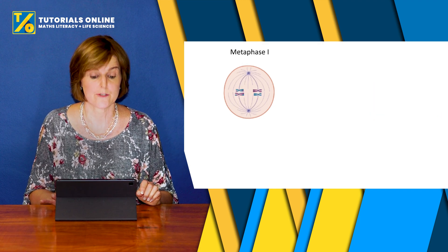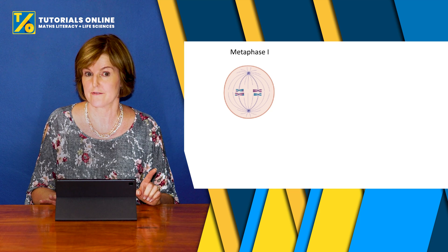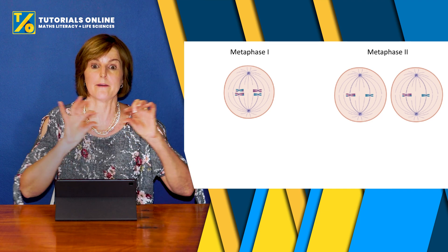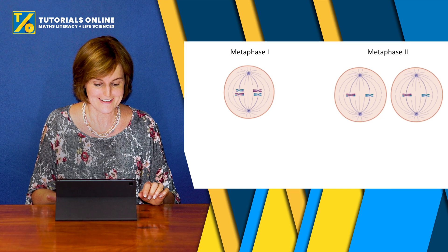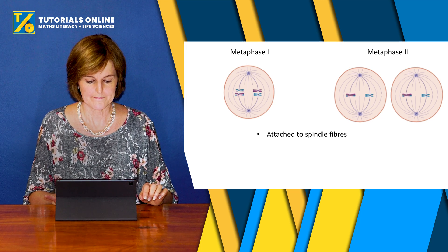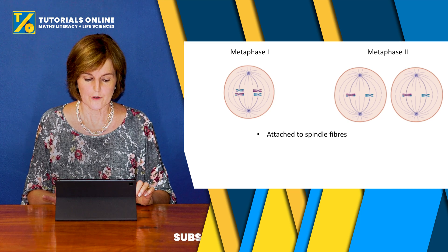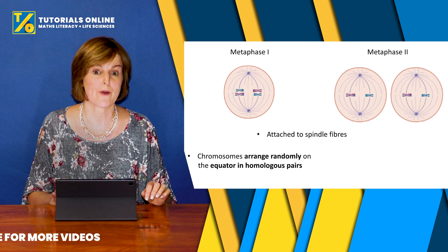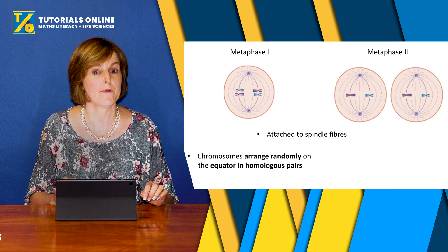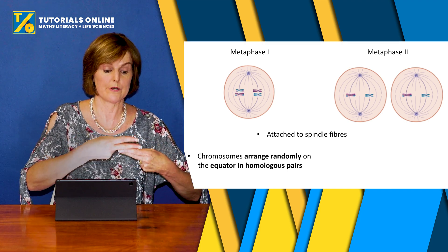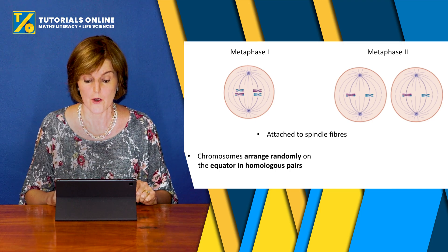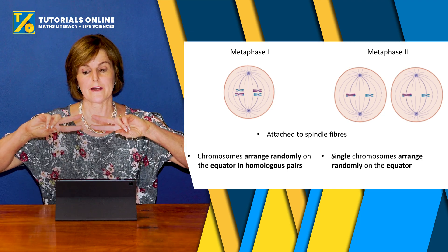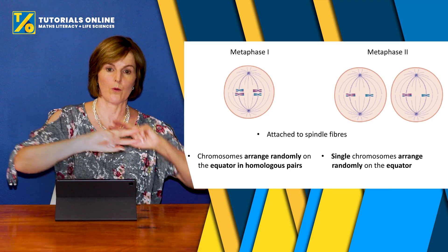In metaphase I and metaphase II, chromosomes are lined up on the equator and attached to spindle fibers in both. The difference is that in metaphase I, chromosomes are arranged in homologous pairs on the equator — two together opposite each other. Whereas in metaphase II, single chromosomes are arranged next to each other in one long line.